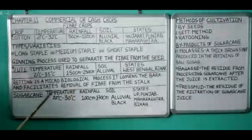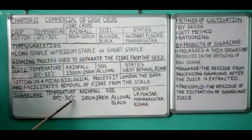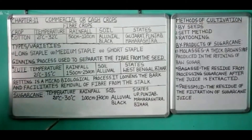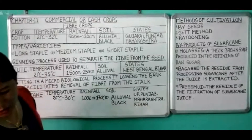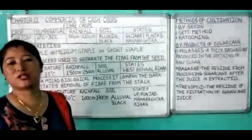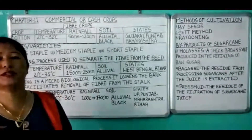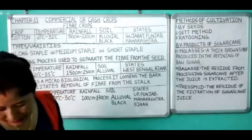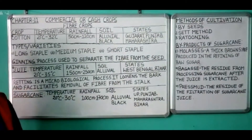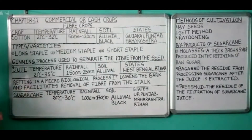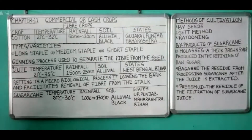Now let's see the geographical requirements. Temperature is 20 to 30 degrees Celsius, and frost is dangerous for the growth of sugarcane. Rainfall requirement is 100 to 170 centimeters, or even up to 200 centimeters, and it should be well distributed, especially during the growing period, when it requires plenty of water. Water logging has to be avoided because it will decrease the sucrose content, so proper drainage is necessary.